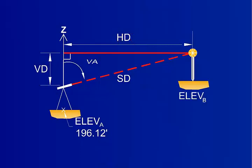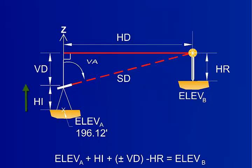With the vertical distance calculated and the height of the rod and instrument measured, we can now find the elevation at B. To find the elevation at B, start from elevation A, add the height of the instrument and the vertical distance, and then subtract the height of the rod.